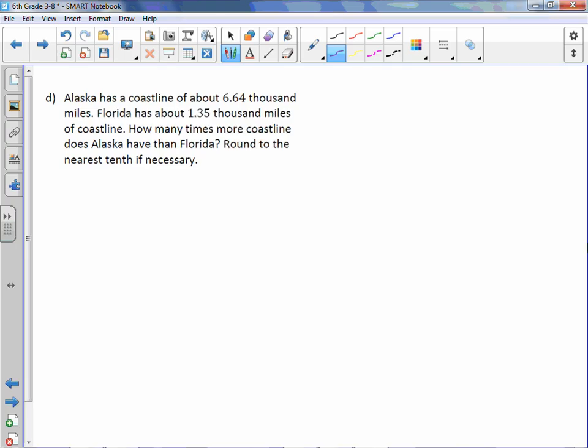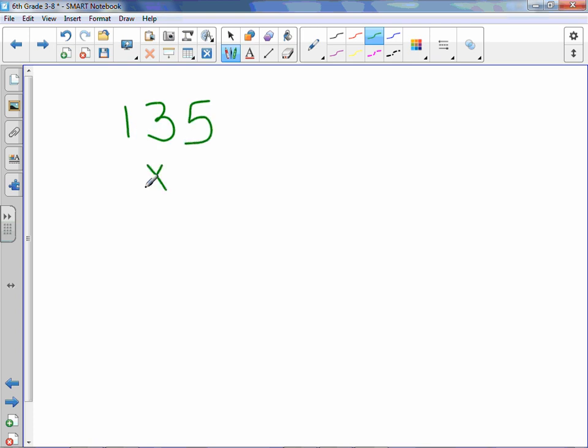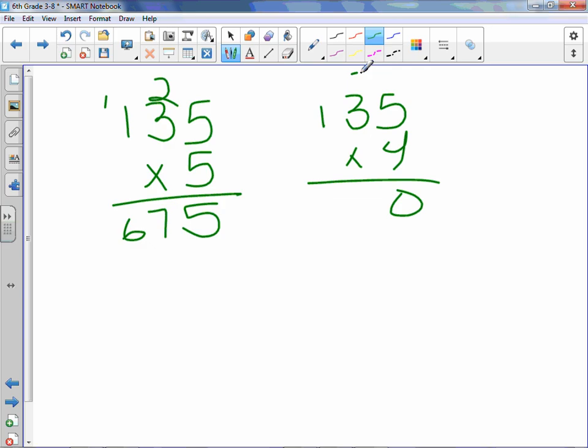Alaska has a coastline of about 6.64 thousand miles. Florida has about 1.35 thousand miles of coastline. How many times more coastline does Alaska have than Florida? Round to the nearest tenth, if necessary. So if we are rounding to the nearest tenth, we need to go one more digit than the tenths place, which is the hundredths place. So we are doing 6.64 divided by 1.35. We need to move our decimal point 2 to the right in both locations and put it up in our answer. 135 into 664. Let's try 5 and see where that takes us. Oh, looks like it's too much. Yep. So we need to do 4 here. So 4 is 540.